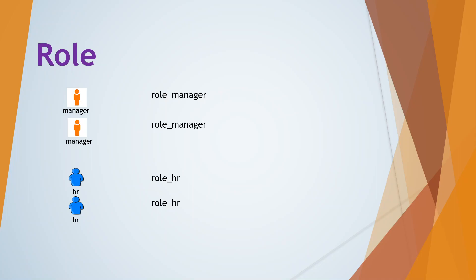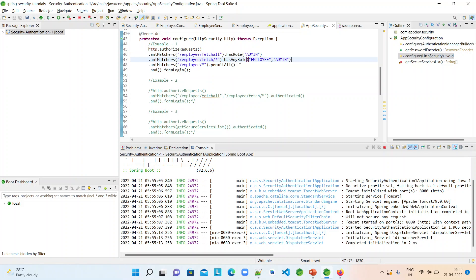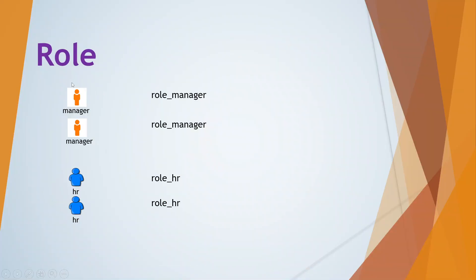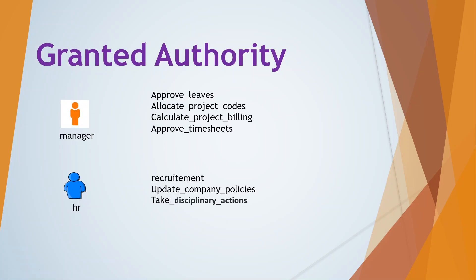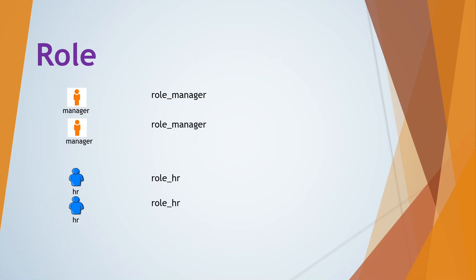So while working with authorization, we have used methods like hasRole and hasAnyRole in our previous example. To summarize: GrantedAuthority means the fine-grained access permission. Role means it is a group or container of authorities — a coarse-grained access permission. We can allocate the role so that all the authorities that are part of that role are directly assigned, and the user is authorized for all actions within that role.